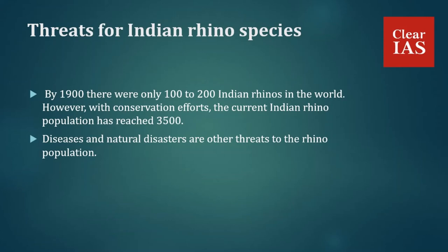IRV 2020 aims to increase this further to 3000 more within 15 years. However, threats have not vanished — Manas National Park has seen several instances of poaching, leading to a moratorium on further translocation. Diseases and natural disasters are other threats; the deaths at Bura Chapori Wildlife Sanctuary are a cause of concern. Human-animal conflict at Pobitora and Kaziranga National Parks can also become a major threat if not handled properly.